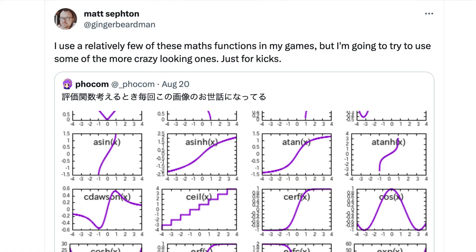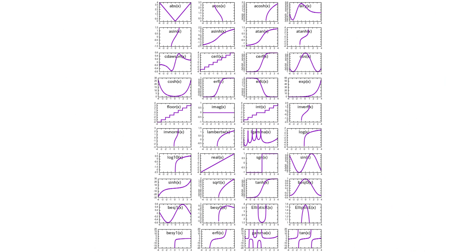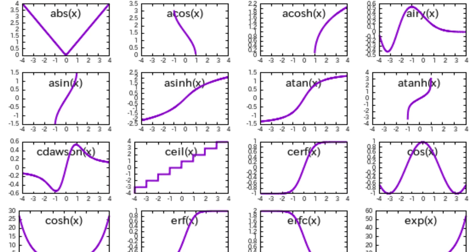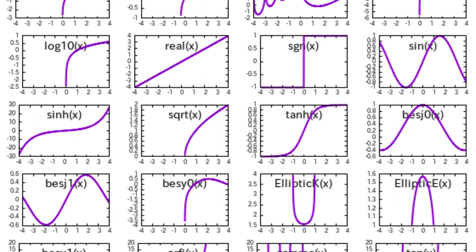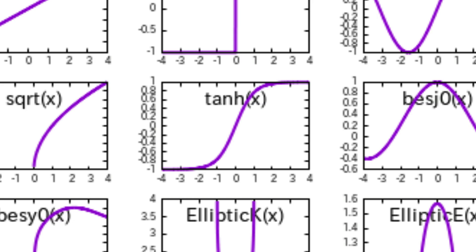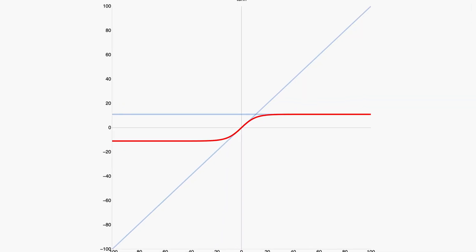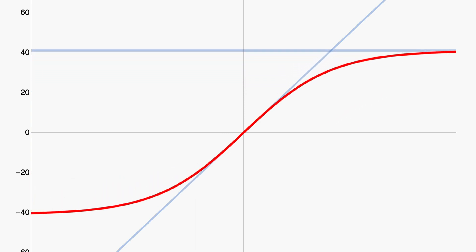I happened to come across a tweet from Matt Sefton, where he retweeted somebody — Focom — who shared this list of images that are useful for graphics programming. I could just look through here and see which of these represents the thing that I want. The one that jumped out at me was tanh — the hyperbolic tangent function. It starts out matching a y equals x graph, which is what you want for low values. Then as the value gets higher, it plateaus at one, gradually. I can scale this graph by multiplying it by some value to set my maximum — so if I multiply by 10, it plateaus at 10.